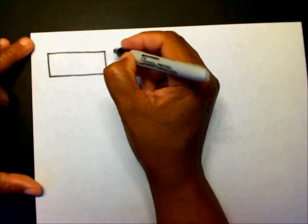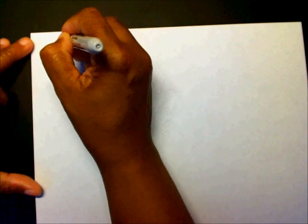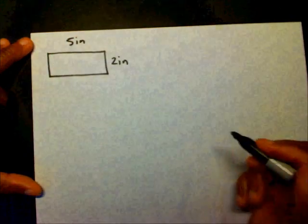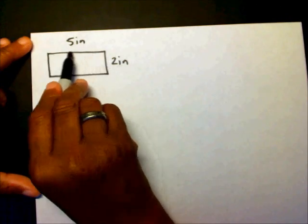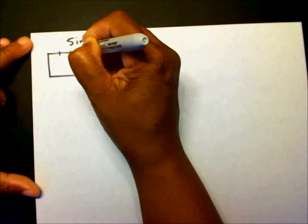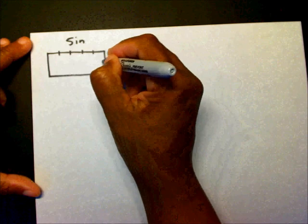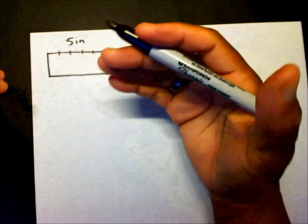So let's say this is 2 inches and this is 5 inches. Now I can create 5 sections of 1. I can create 1, 2, 3, 4, 5 and then divide it up into 2. But I really don't want to do that every time.